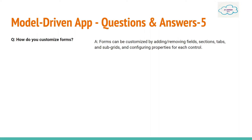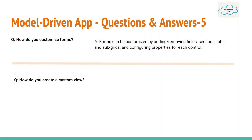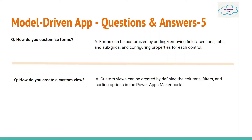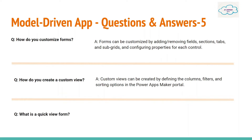Next question: How do you customize forms? Forms can be customized by adding or removing fields, sections, and tabs. Next question: How do you create a custom view? Custom views can be created by defining the columns, filters, and sorting options in the Power Apps maker portal.